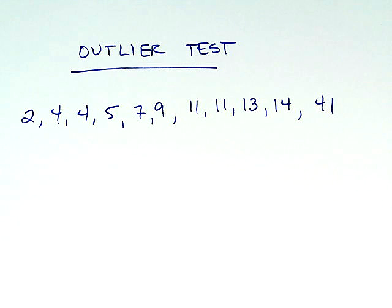So we want to learn how to run the outlier test. The very first thing you always want to make sure of in a box and whisker plot is that your data is listed in numerical order, least to greatest. I've already gone ahead and done that for us.